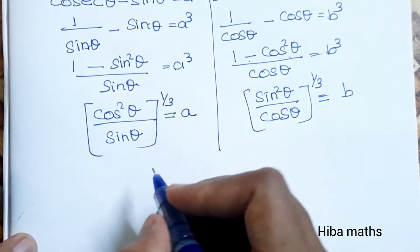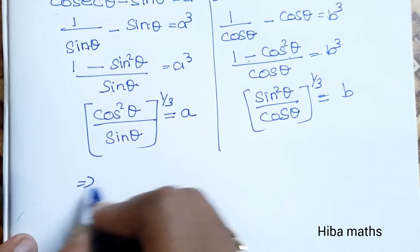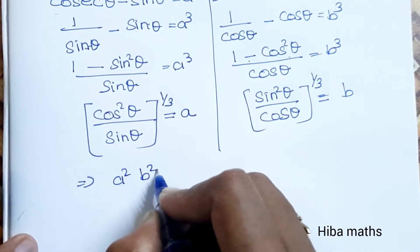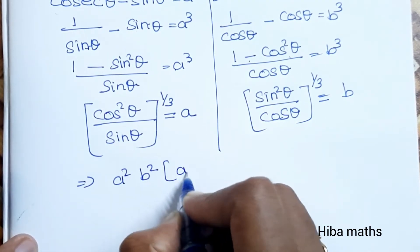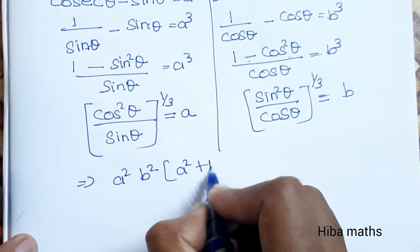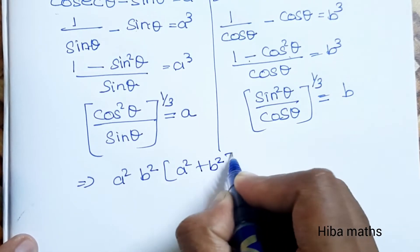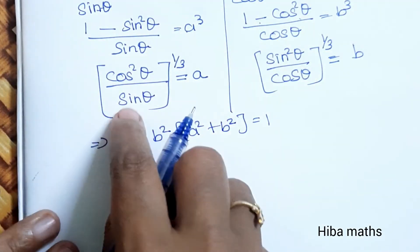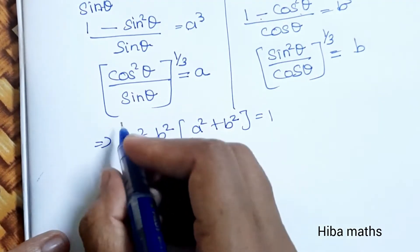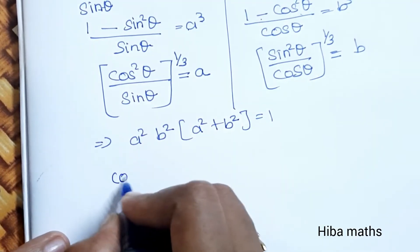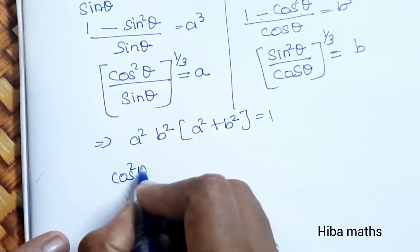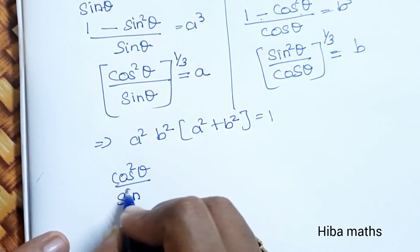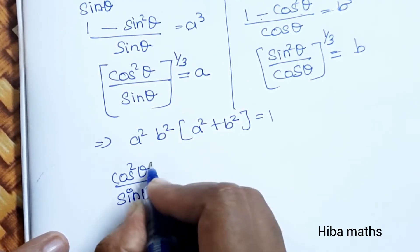Now for the proof, we substitute the values of a and b into the LHS: a square into b square into a square plus b square equals 1. The value of a is cos square theta divided by sin theta, raised to the power 1 by 3.